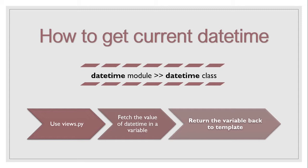For execution, we are going to use the views.py file. In that file, we will create a view in which we create a variable that fetches the current datetime value using the datetime class. Then we will return this variable back to the template and print out the current datetime value.